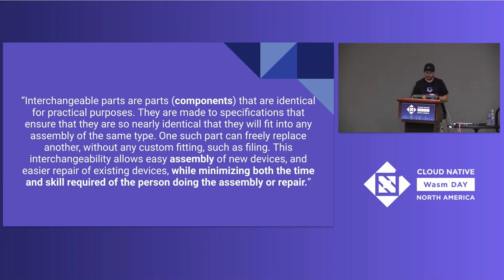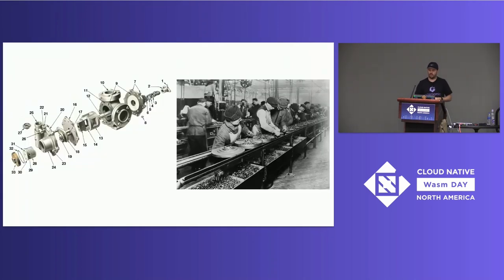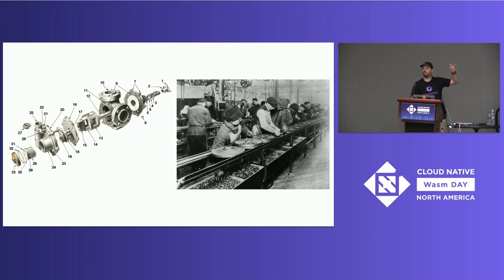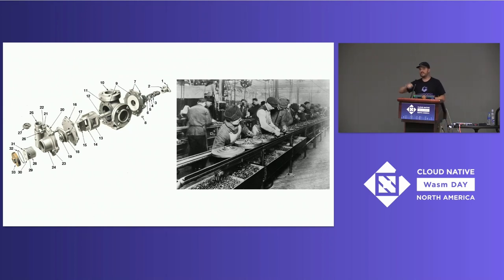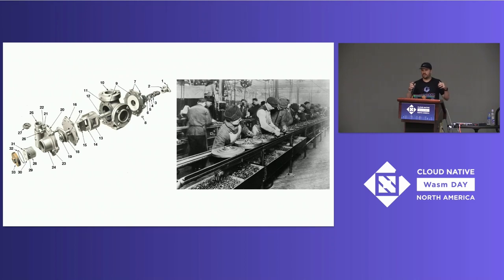That sounds a lot like what we want WebAssembly components to do. In practice, there were part diagrams spread out so you could take any one of these parts and reassemble them. In the picture on the right you see an old assembly line from the early 1900s with buckets of screws and bolts all the exact same size — you could just go down, grab one, and put it in. Because each part is produced to those exact specifications, this is what kicked off what people call the Industrial Revolution.